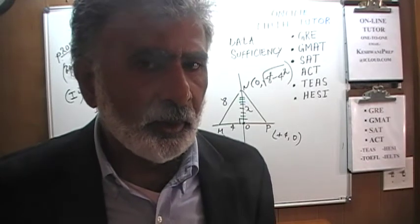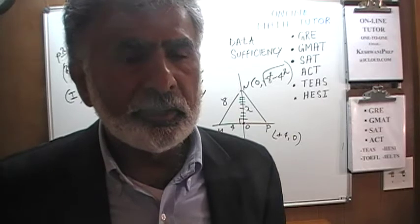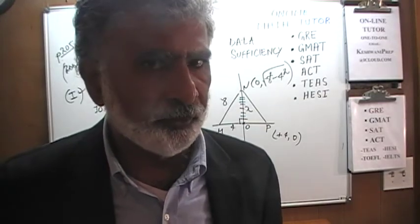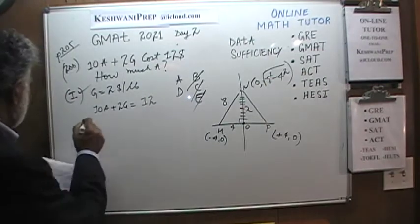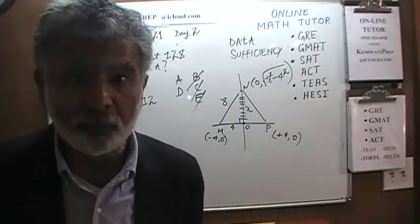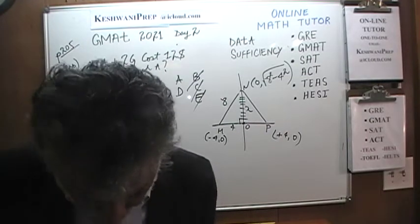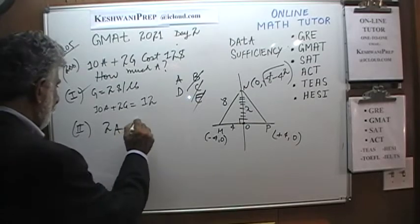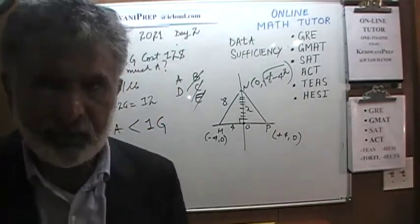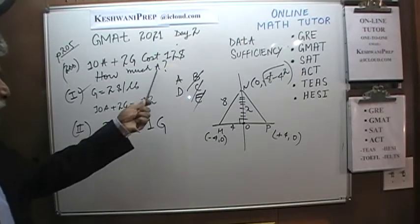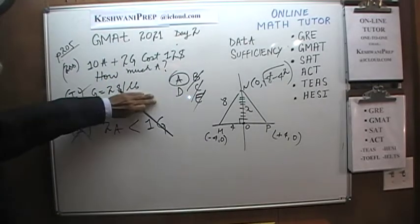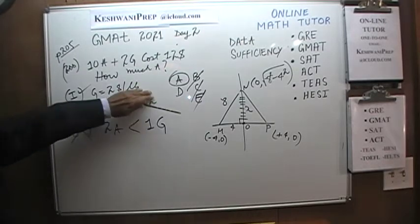If the second statement also by itself gives enough information, the answer would be D. The second statement tells us that 2 pounds of apples cost less than 1 pound of grapes. Simply knowing that does not enable us to figure out the cost of apples — this information is worthless. The answer is A.